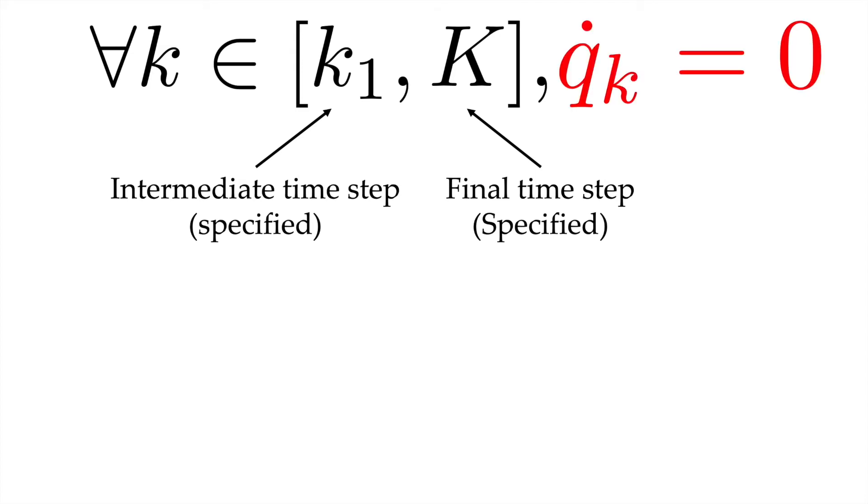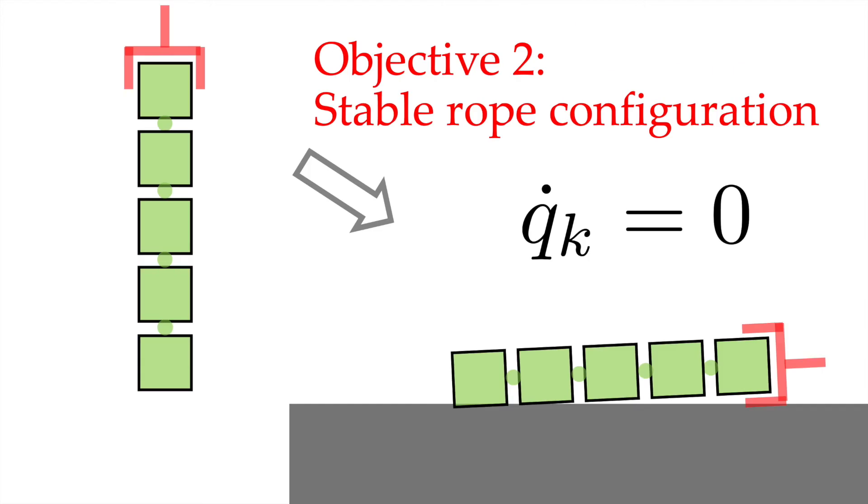And during that range, we want the q dot k to be 0, which means that we want the velocity of the rope to be 0. This corresponds to our second objective, stable rope configuration. We don't want the rope to move.